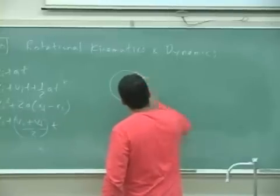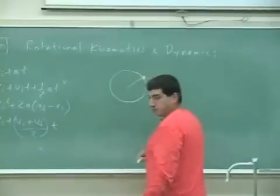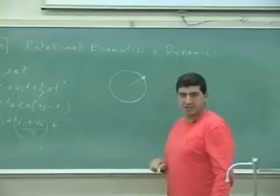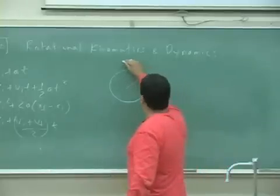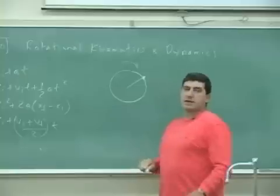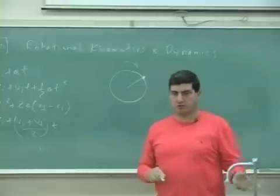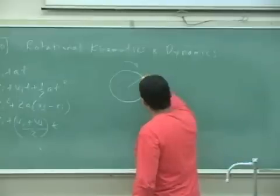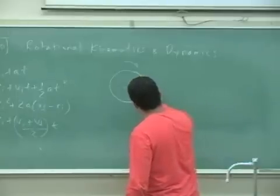So what we want to know is if there's a certain point on the disk, as it rotates, what's the angle covered by that point? So let's say it starts here, and at a certain time it goes over there.